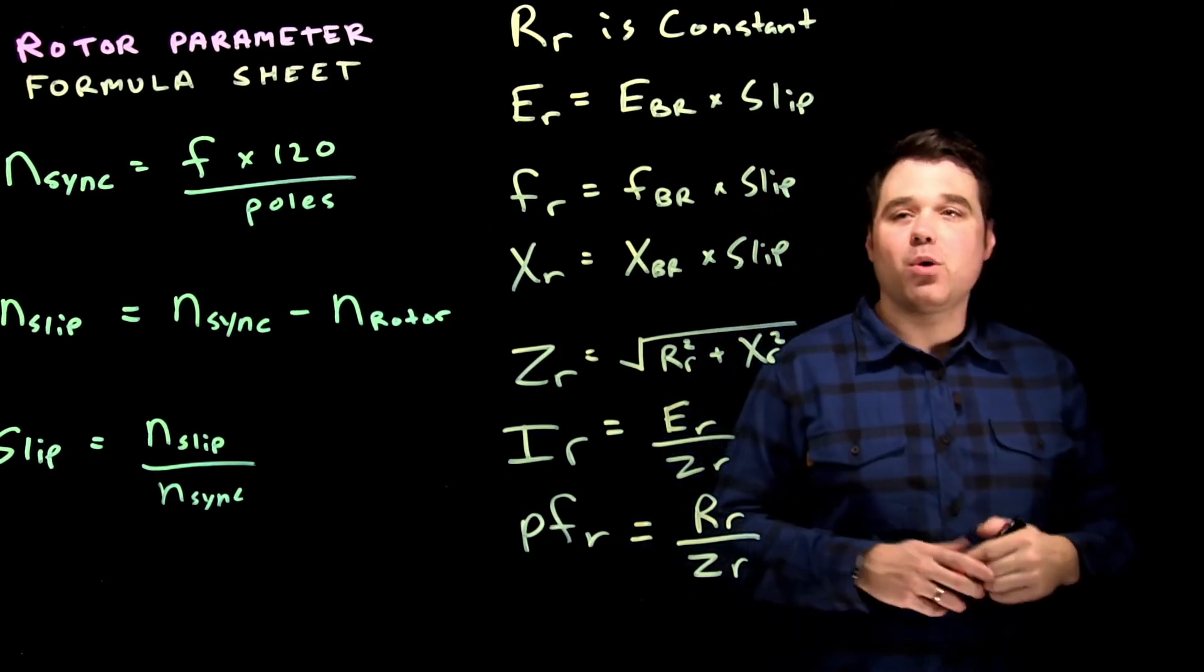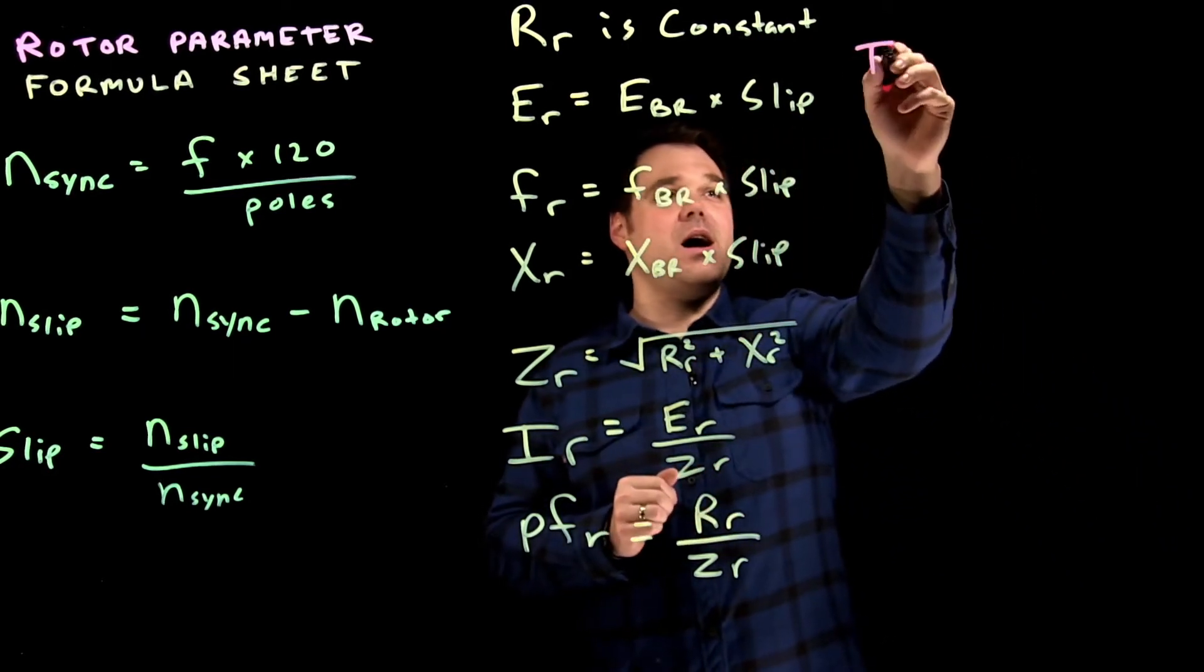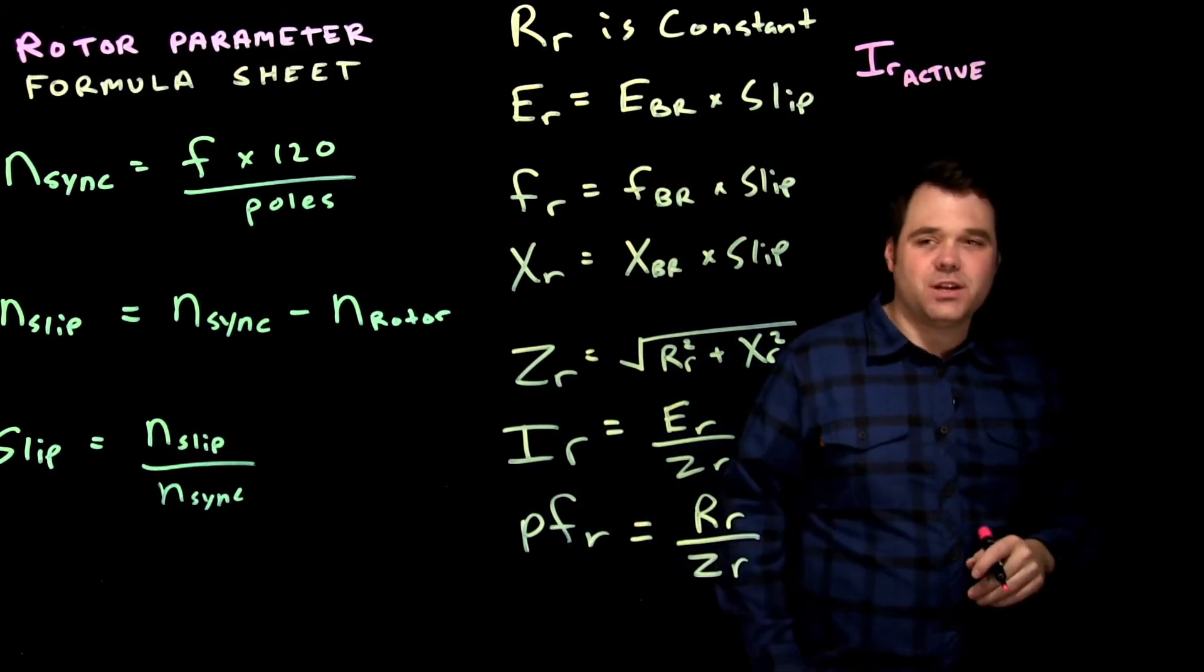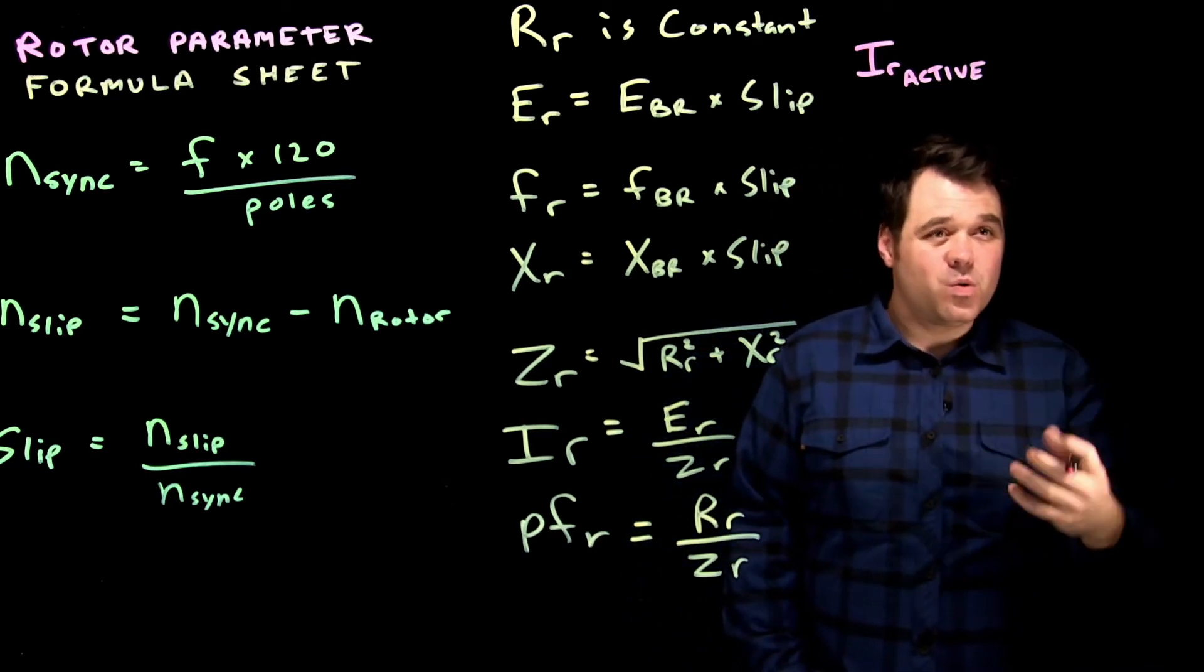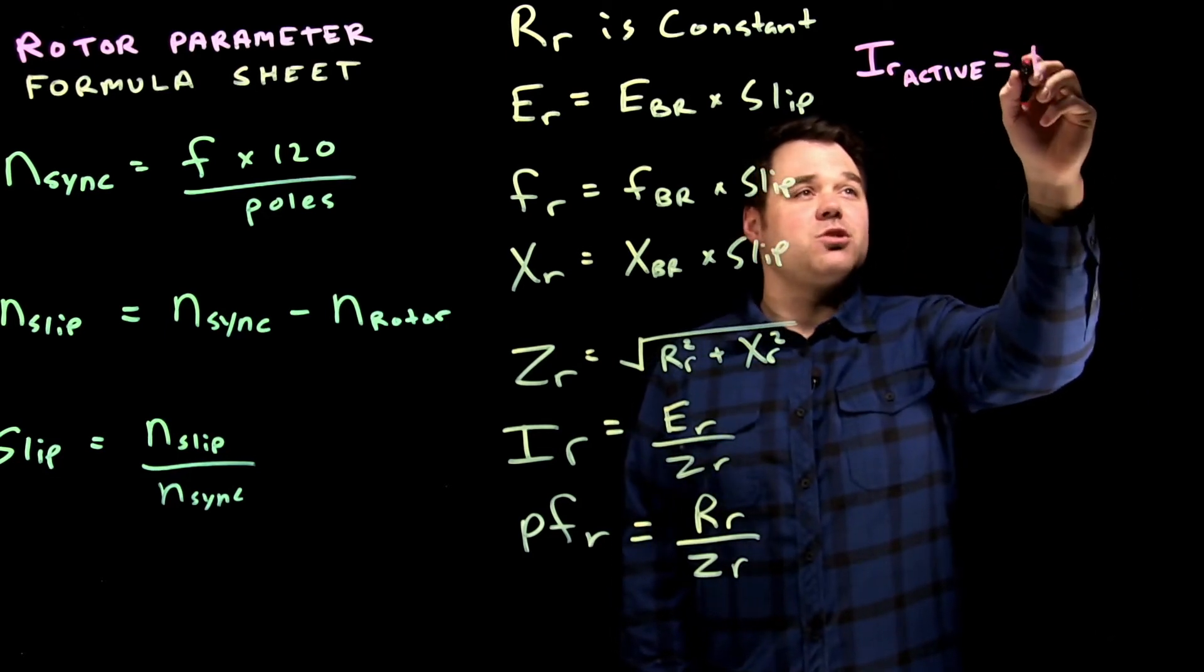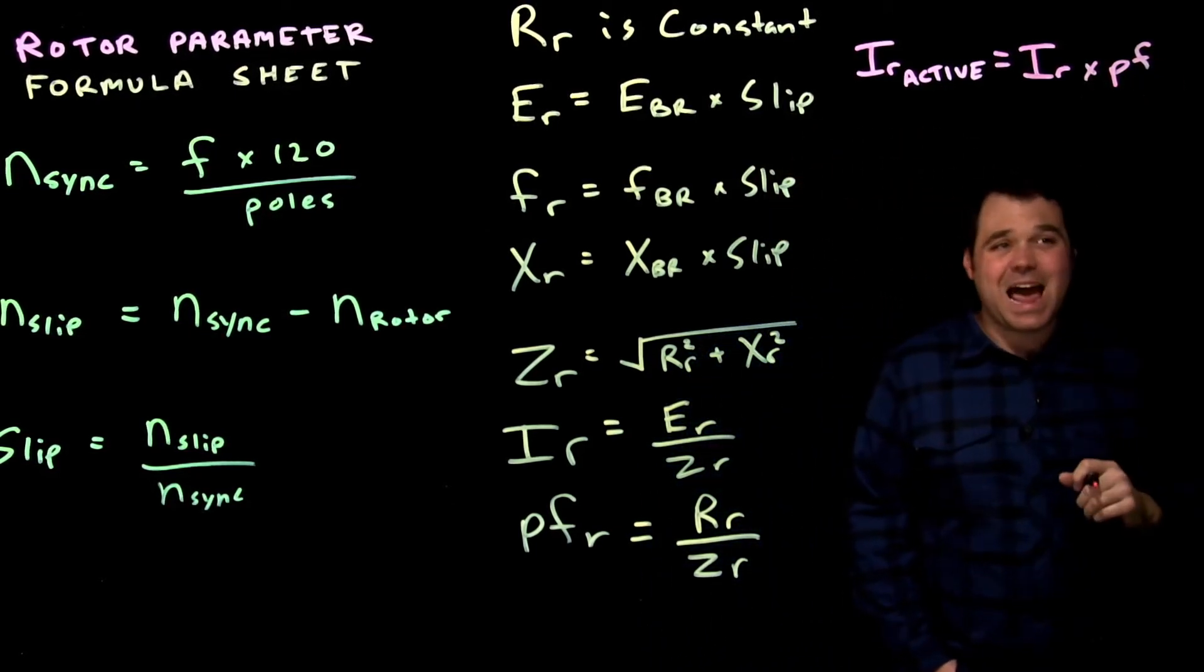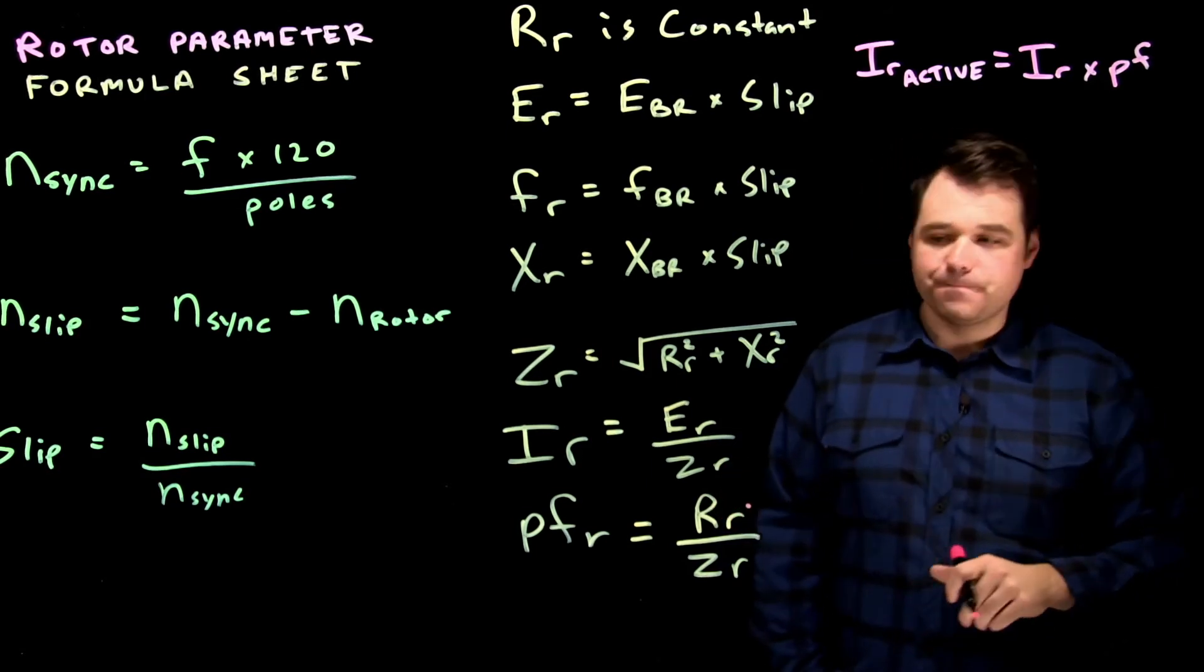So what's most important inside a rotor is what we call the active current, right? So we can call it the IR active, or IRR, you'll see a bunch of different things. But this is the actual current inside the rotor that is generating torque. It's the one that's getting that rotor to spin. So we're going to take the total current of the rotor, multiply it by our power factor. That's how we get the active current because it's the in-phase component, or what would be that resistive component there.